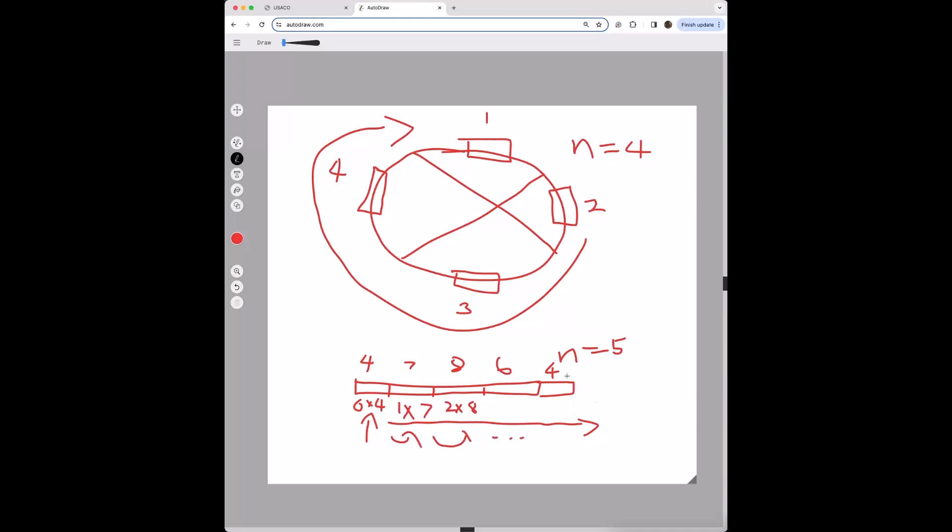Once we reach the end, since you can't really have a circular array, what we can just do is once i is equal to n minus one, we loop back to the beginning and then we realize this is our starting point so we can just cut it off from there.